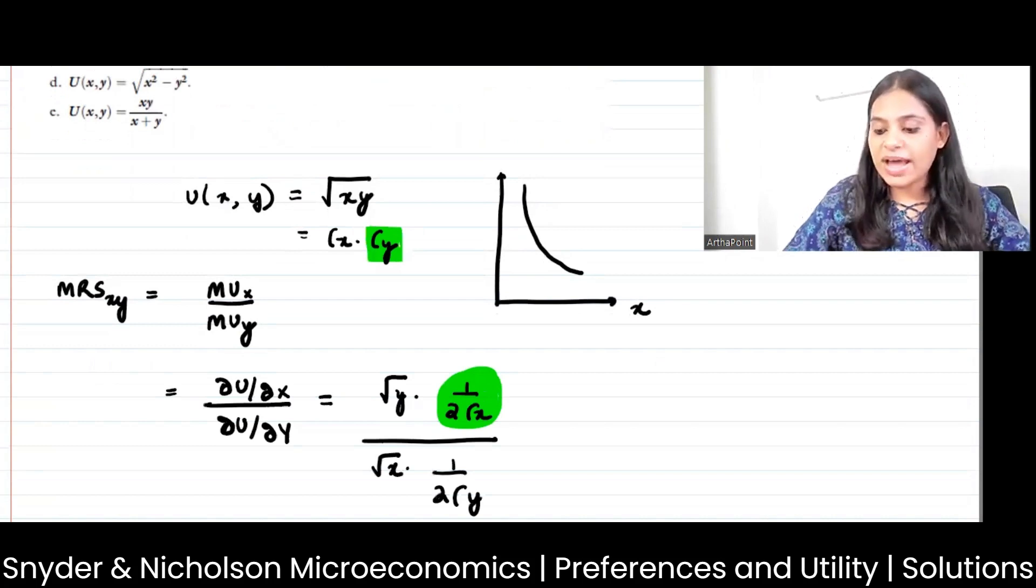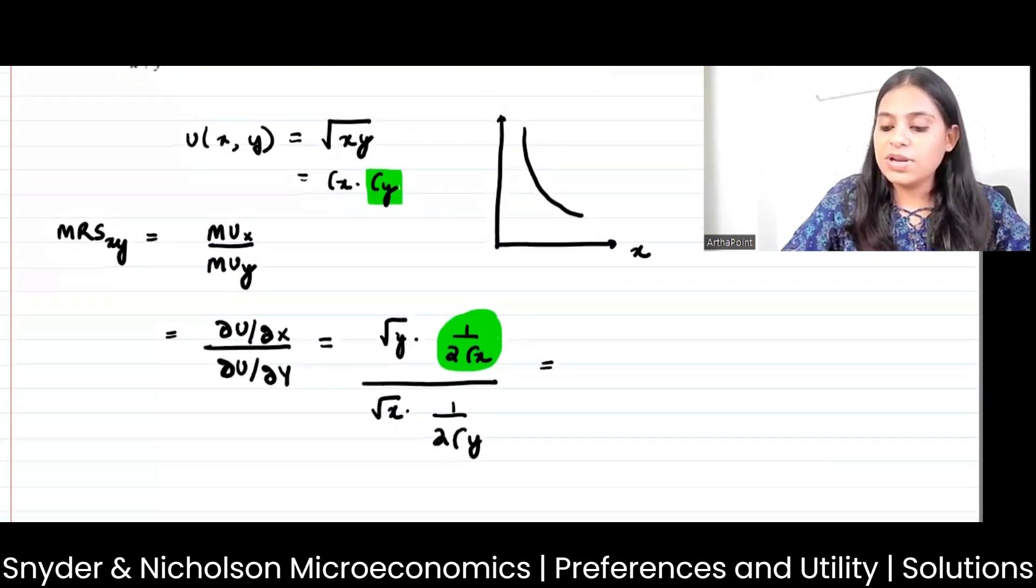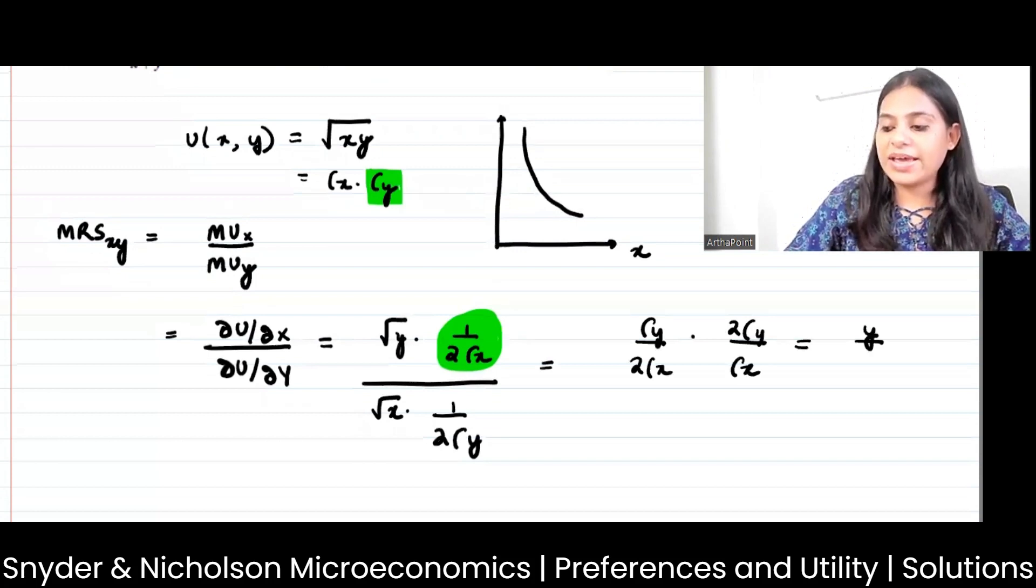When you do that, you will get root y by 2 root x times 2 root y by root x, so this will be y by x.